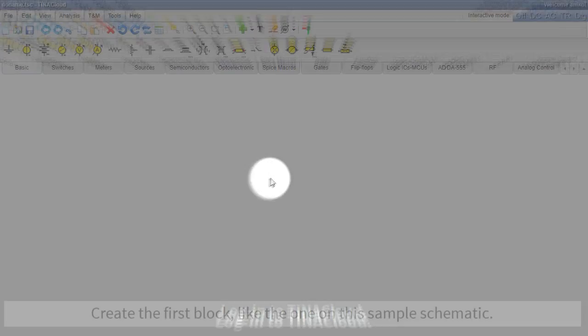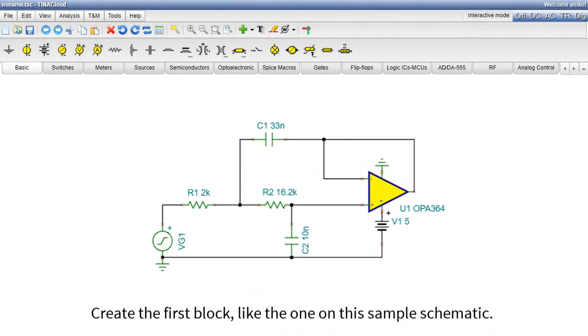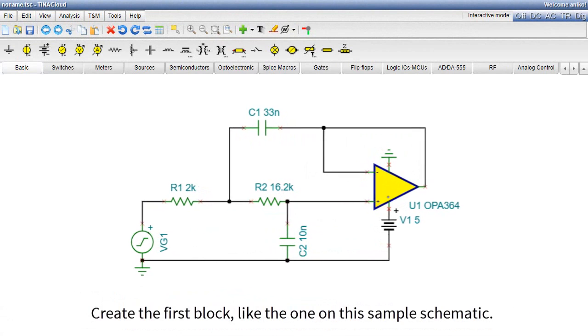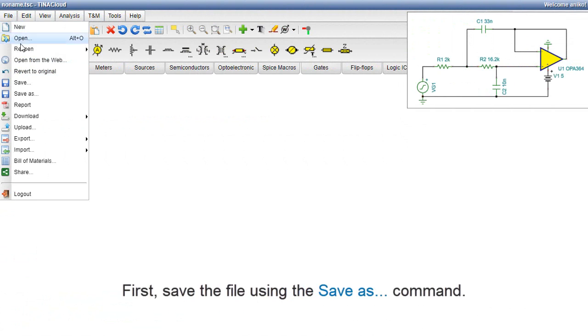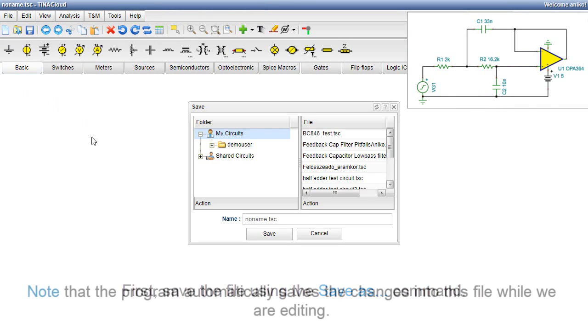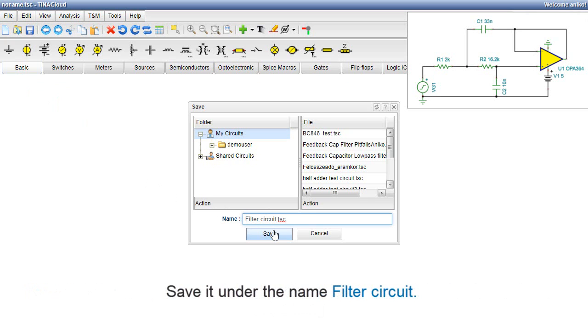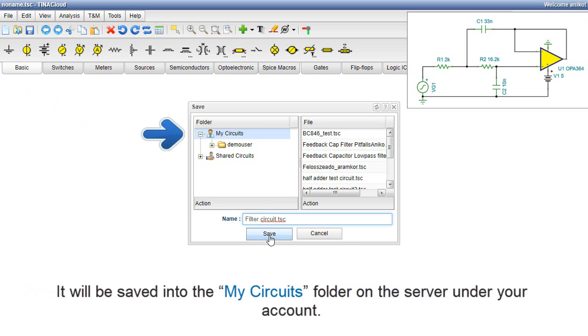Log in to TINA Cloud. Create the first block like the one on this sample schematic. First, save the file using the Save As command. Note that the program automatically saves the changes into this file while we are editing. Save it under the name Filter Circuit. It will be saved into the My Circuits folder on the server under your account.